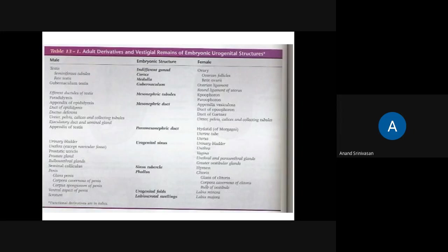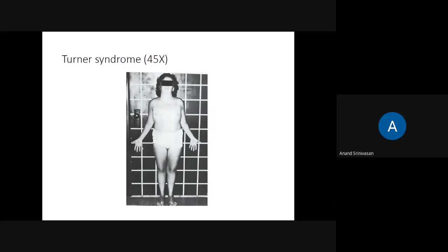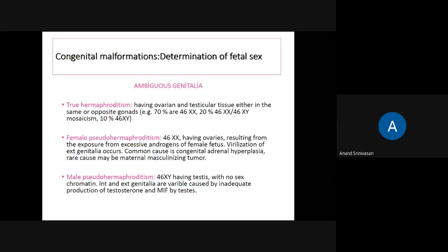This final chart from Langman shows from which structure what is formed — in males and females — so you can differentiate both sides. You must know the mesonephric duct derivatives in males and females. Turner syndrome involves only 45 chromosomes, and in this condition the secondary sexual characters of the female are not developed.